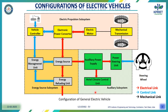This is the actual structure for the configuration of a general electric vehicle. It consists of three major subsystems: the electric propulsion system, the energy source subsystem, and the auxiliary subsystem. The red line indicates the electrical link, the blue line indicates the control link, and the black line indicates the mechanical link.